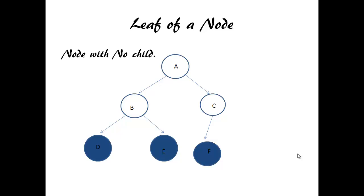Leaf of a node. Leaf of a node is a node with no child. D, E, F are leaf nodes.